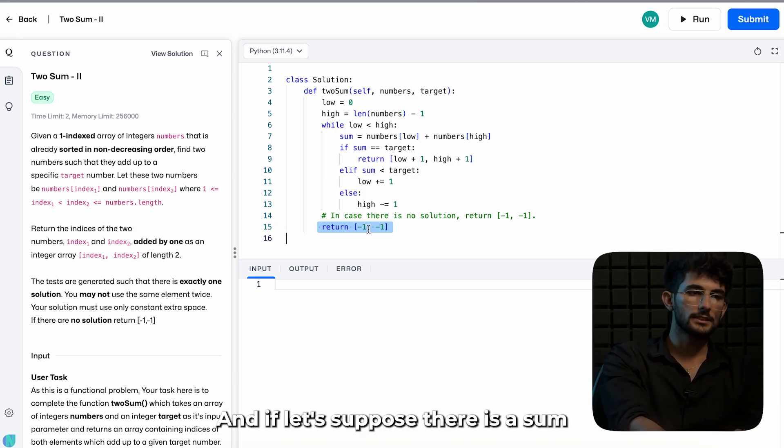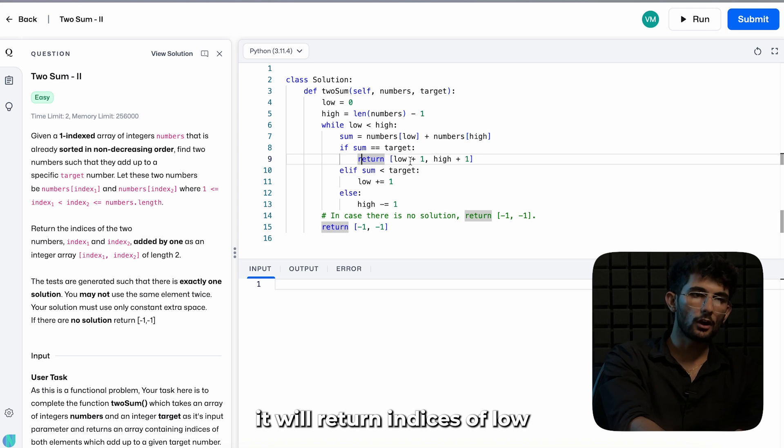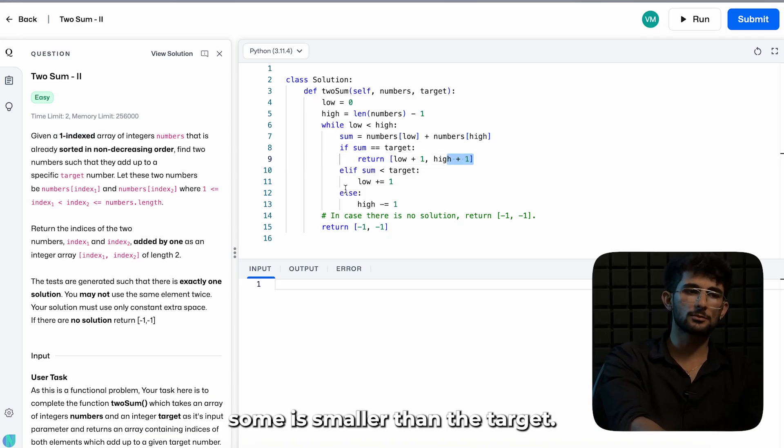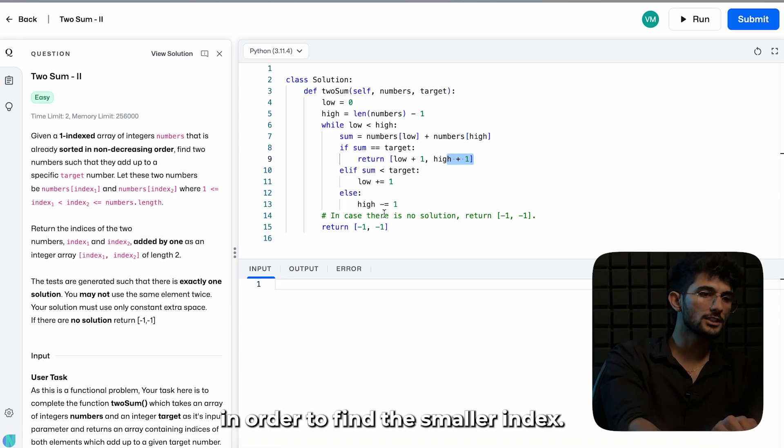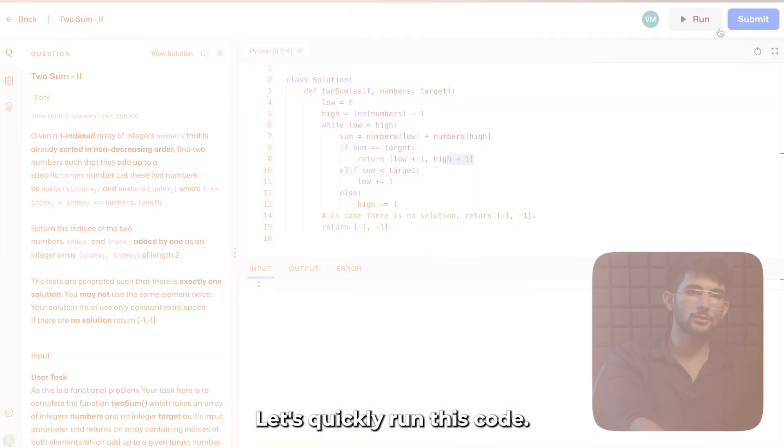And if let's suppose there is a sum which is equivalent to the target, it will return indices of low plus one and high plus one because our array is one indexed, it is not zero indexed. If the sum is smaller than the target, we will move the low to plus one to find the bigger number. Whereas if the target is greater than sum, then we will reduce one number from the high in order to find the smaller index.